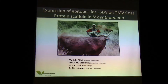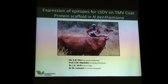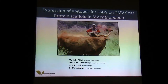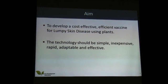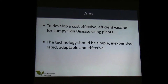We are from a country which has a large cattle population, and one of the largest exports of the country is cattle. In the background you see one of the local farmers standing in front of his cow which has lumpy skin disease. The aim of the project was to develop a cost-effective vaccine that is efficient for lumpy skin disease, using plants instead of the traditional tissue culture and eggs.